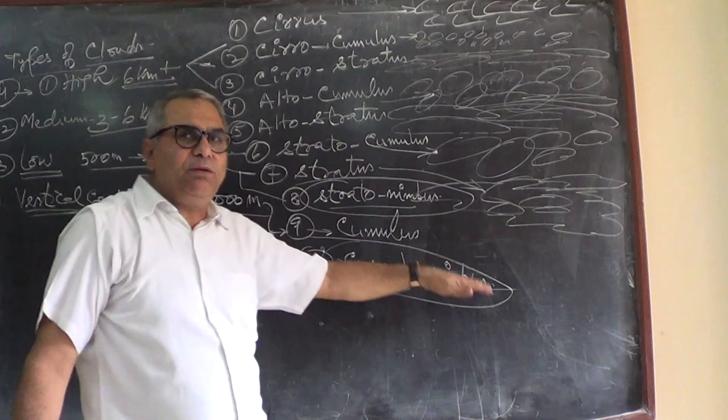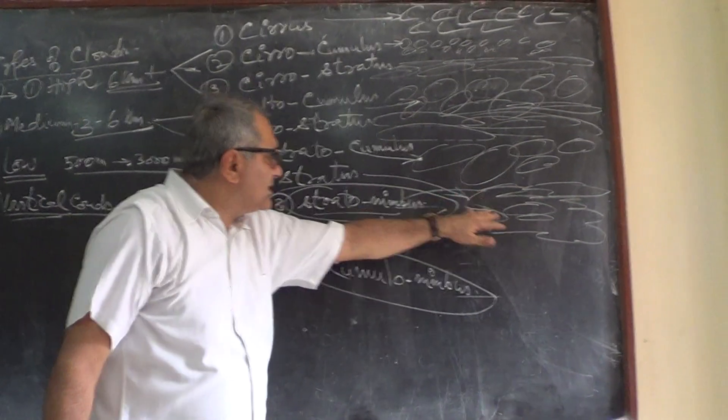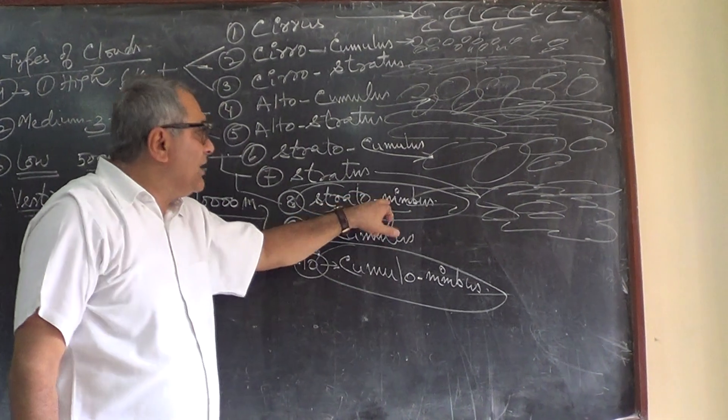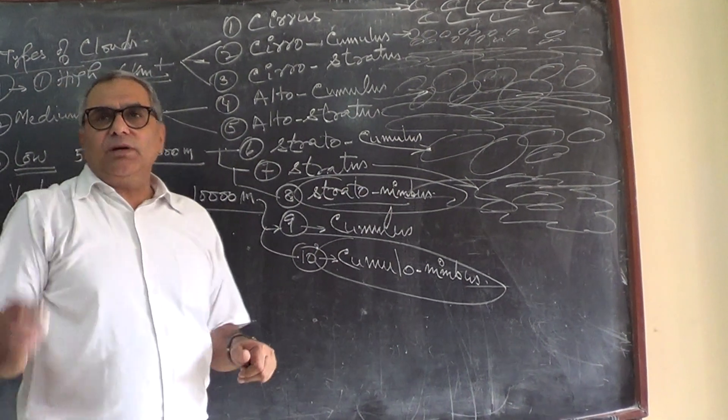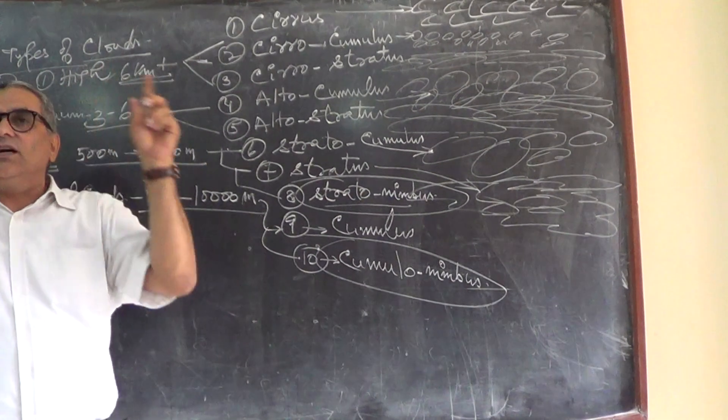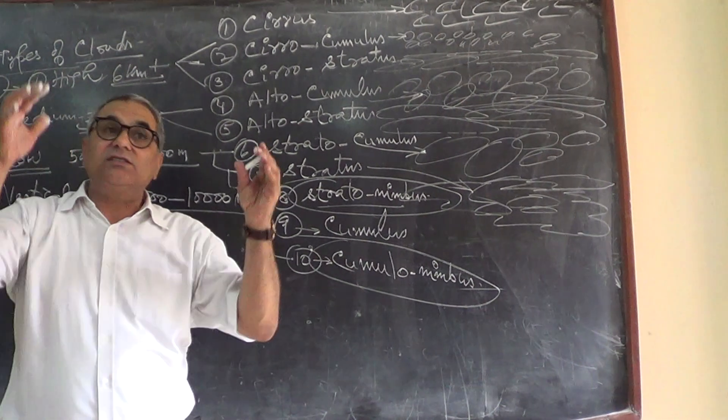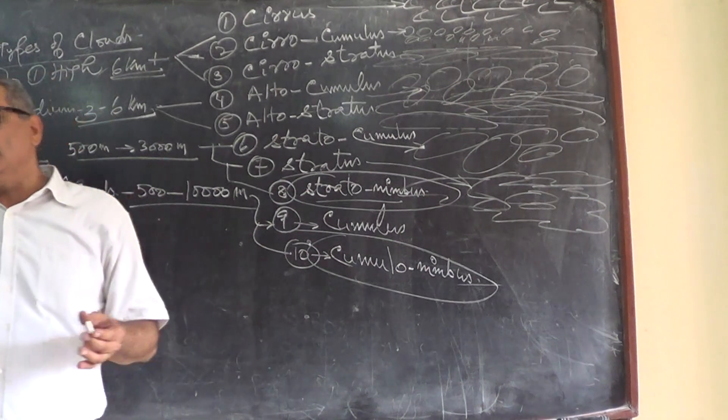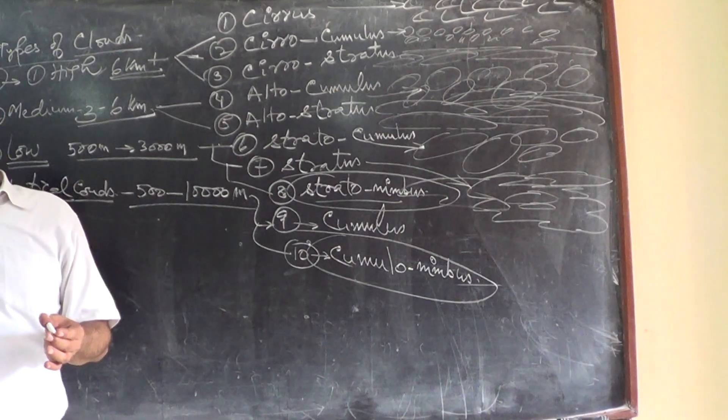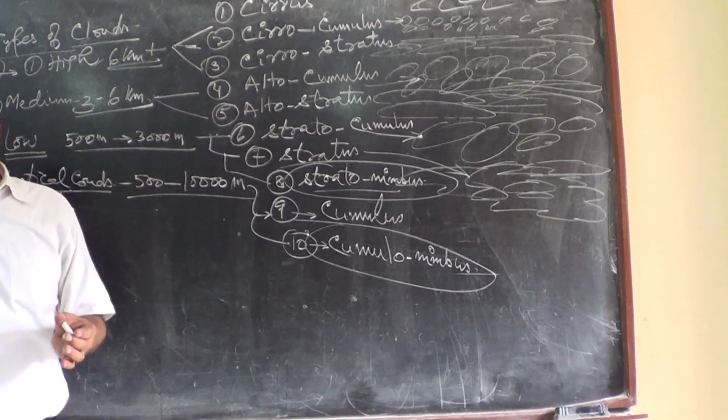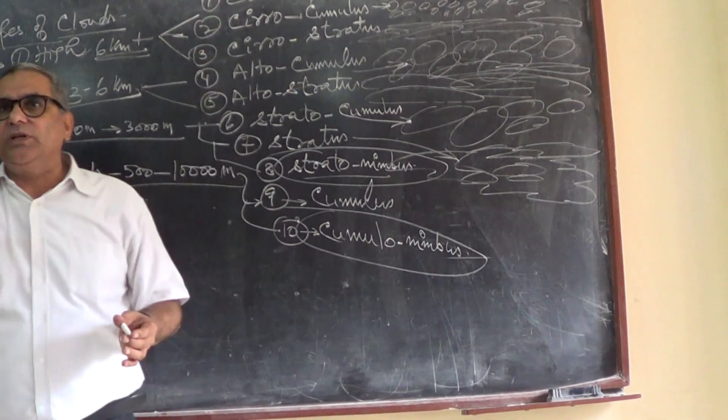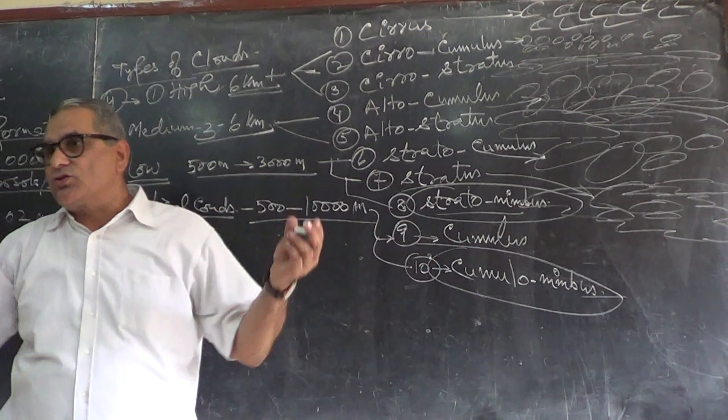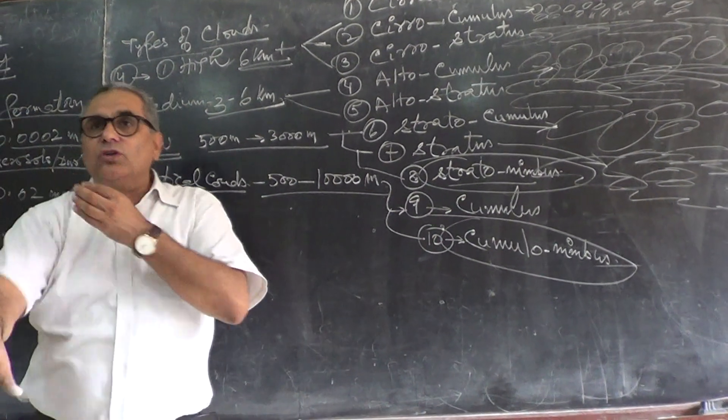They convert into the nimbus cloud. Then we have the stratonimbus. Nimbus are dark colored clouds. They are dark, not because they absorb the light, but the density of moisture is so high, sunlight could not penetrate. So they look like dark.